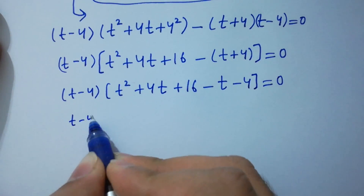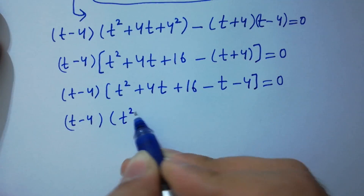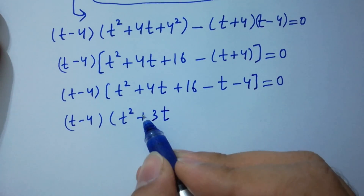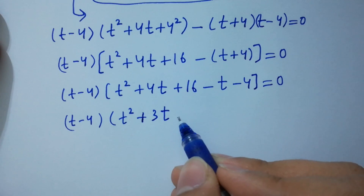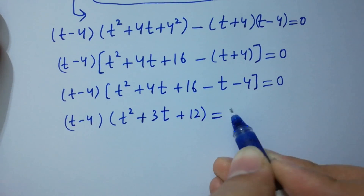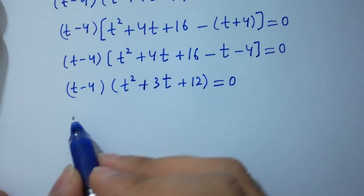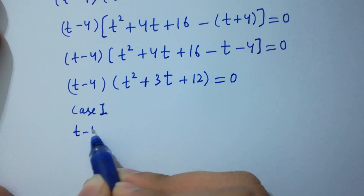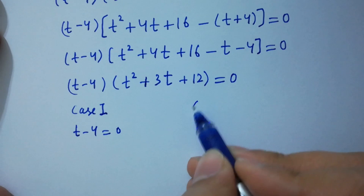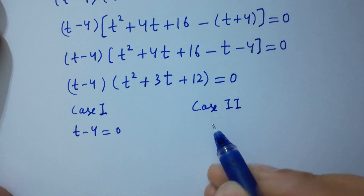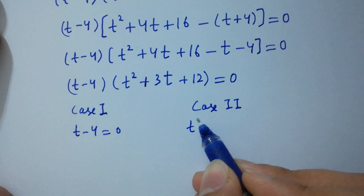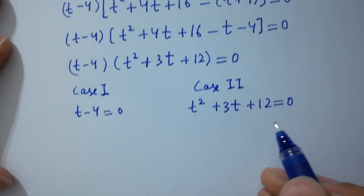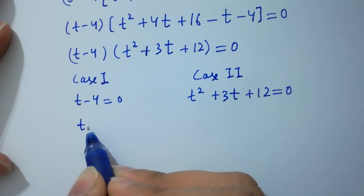So we have two cases. Case one: t minus 4 equals 0, giving t equals 4. Case two: t square plus 3t plus 12 equals 0, which is a quadratic equation.